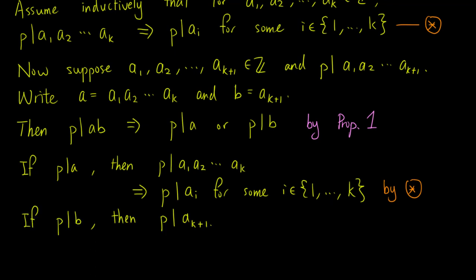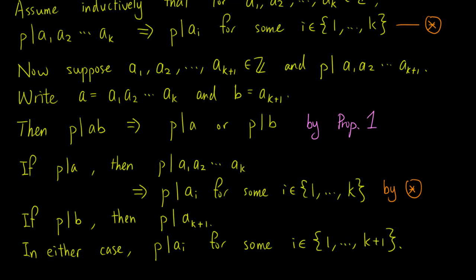If p divides b, then p divides ak+1. In either case, p divides ai for some i in the set 1 to k+1. So the inductive case is complete.